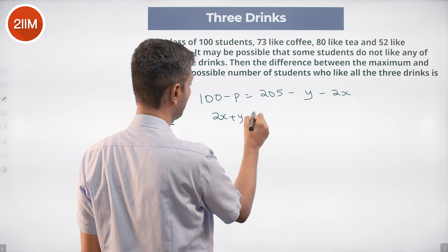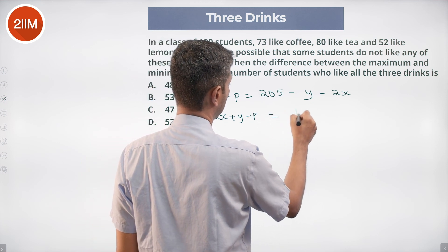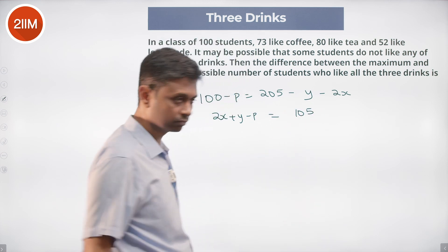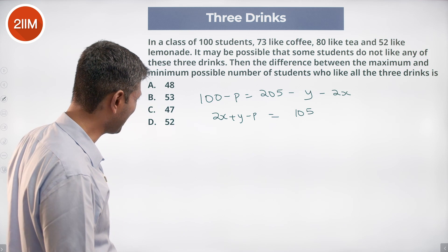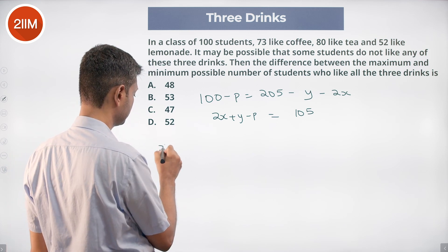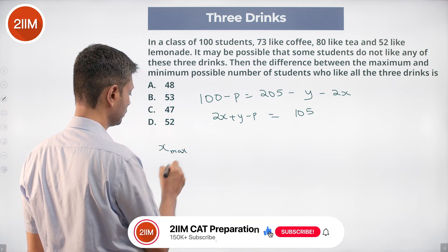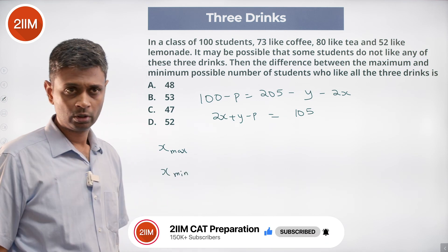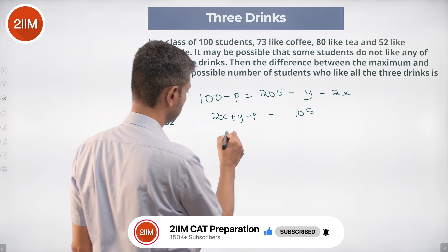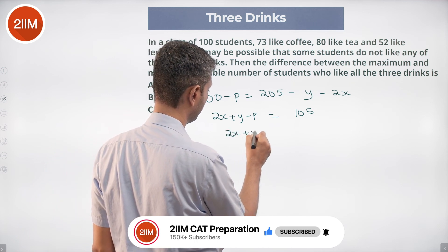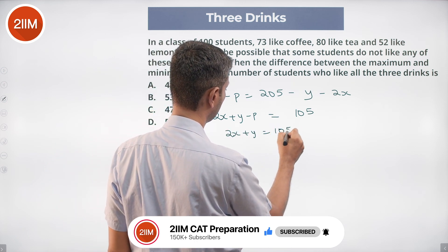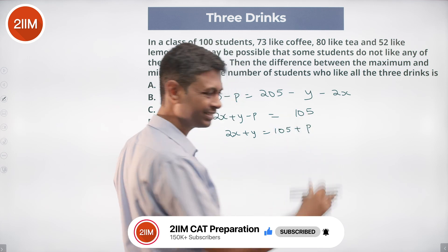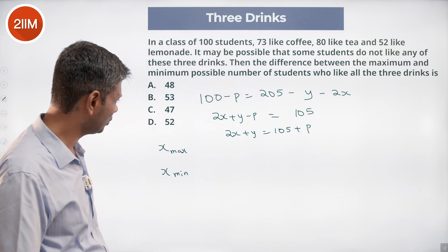What are we interested in? We want to find the maximum value of x and a minimum value of x. So 2x plus y equals 105 plus p, and rewrite it like this. We want to find a maximum value of x.